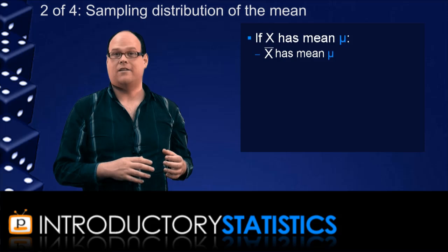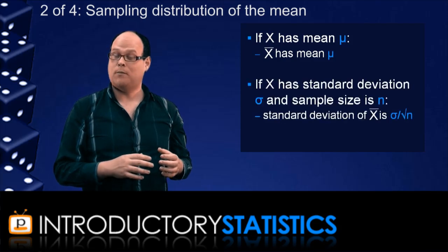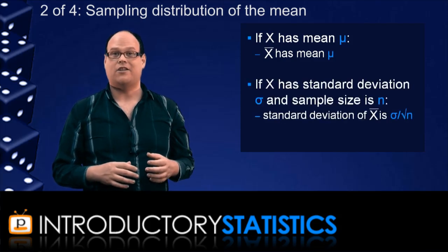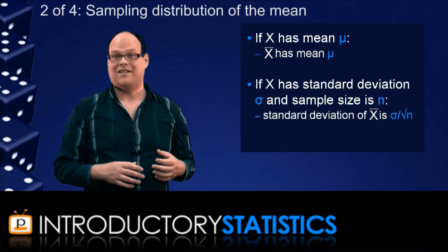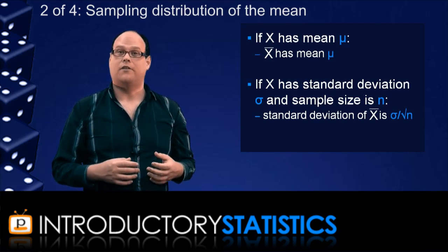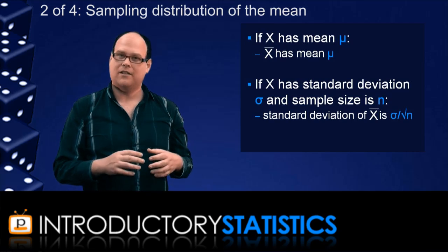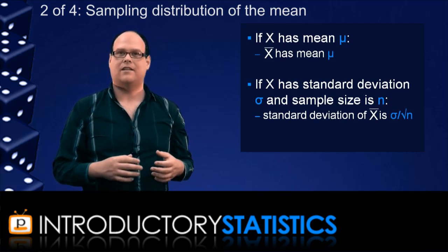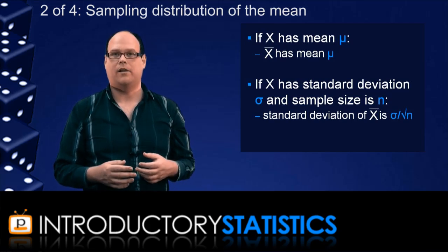Also, sample means don't tend to vary much. In fact, if your original population X has standard deviation sigma, and you're drawing samples of size n, then X bar has a standard deviation of sigma over the square root of n. In other words, the larger the sample size is, the less sample means vary about the population mean.